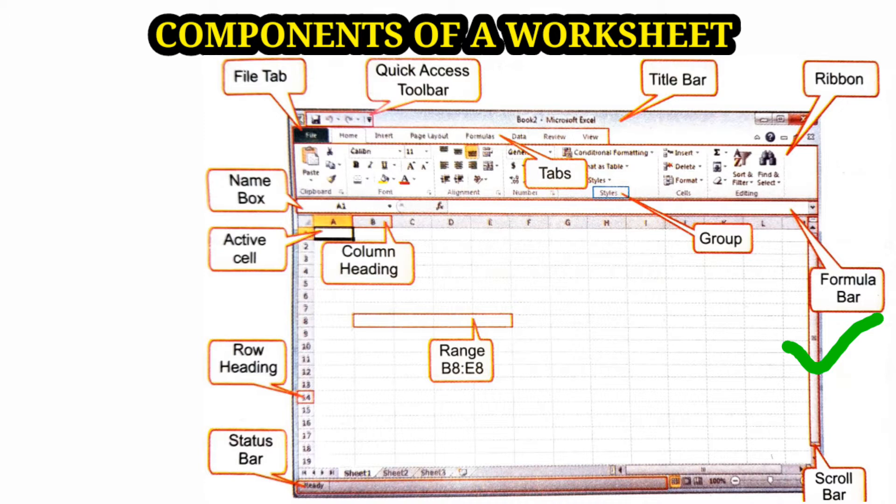Column heading - alphabets across the top border of each worksheet are called column headings. These headings identify columns with letters A to Z, AA to AZ, and up to XFD for a total of 16,384 columns.